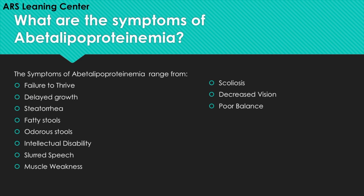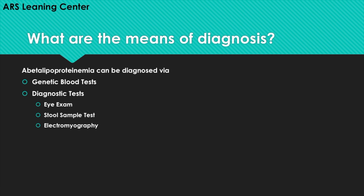What are the symptoms of abetalipoproteinemia? The symptoms range from failure to thrive, delayed growth, steatorrhea, fatty stools, odorous stools, intellectual disability, slurred speech, muscle weakness, scoliosis, decreased vision, and poor balance.